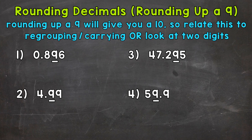Let's jump into number 1, where we have 896 thousandths. The first way we're going to think through this is to relate it to regrouping or carrying like we do in an addition problem. We're going to round to the hundredths place. The digit in the hundredths place is underlined — that 9. So let's look to the right and see if we round up or stay the same. We have a 6. Remember, 5 or more, we round up. So 6 is 5 or more, we're going to round up.